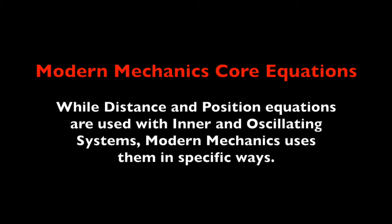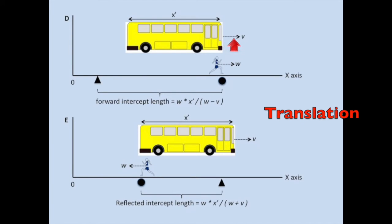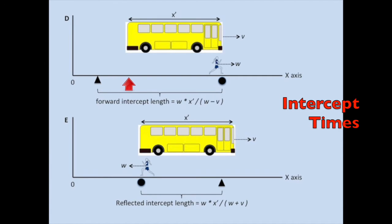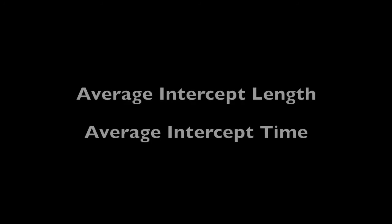In the last episode I developed length and position equations that apply to every moving system. I specifically used the translation equation to explain the motion of an inner system. I also used the forward and reflected intercept lengths to explain several distances associated with an oscillating system. The forward and reflected intercept times explain how long it takes for an oscillating system to travel their respective lengths.